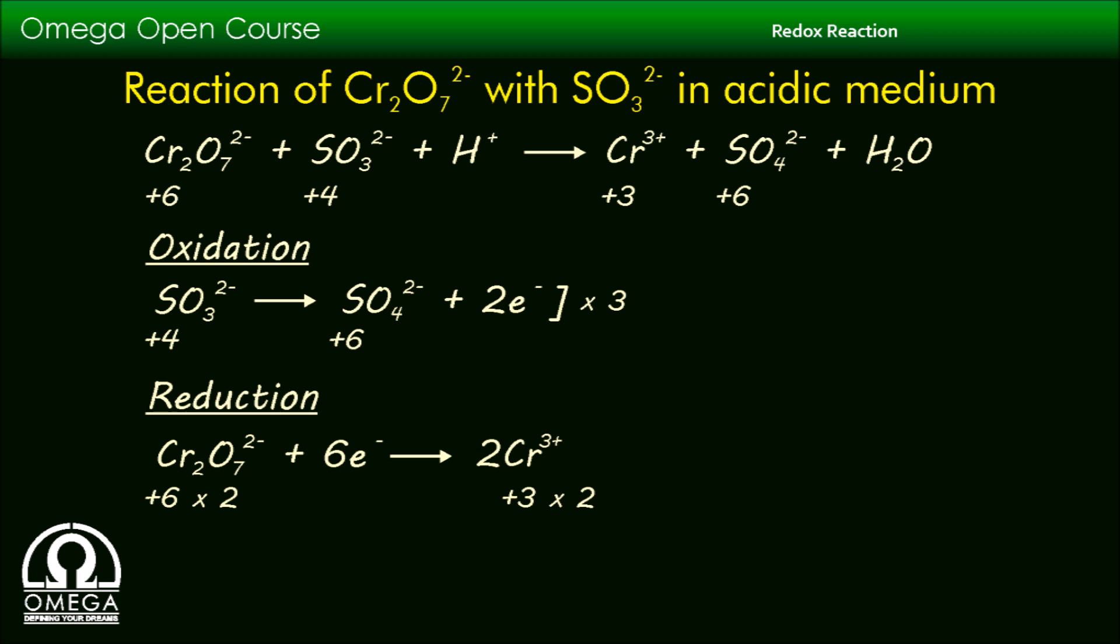Now we have the coefficient of important species in reactants as well as products. Coefficient of dichromate ion is 1 and that of Cr^3+ ion is 2. Coefficient of SO3^2- and SO4^2- is 3.